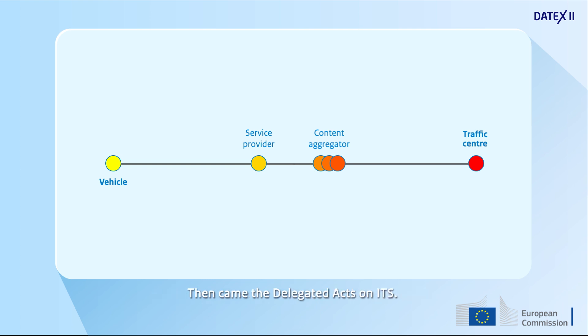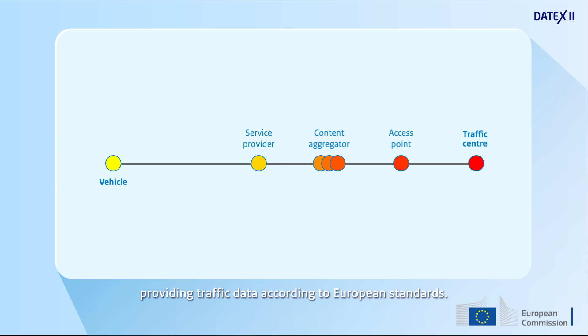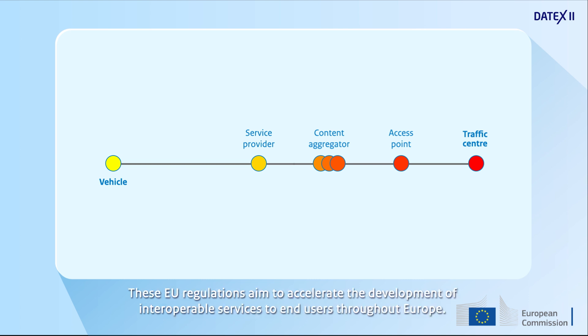Then came the Delegated Act on ITS. They instigated the setup of national access points for several types of traffic information, providing traffic data according to European standards. These EU regulations aim to accelerate the development of interoperable services to end users throughout Europe.